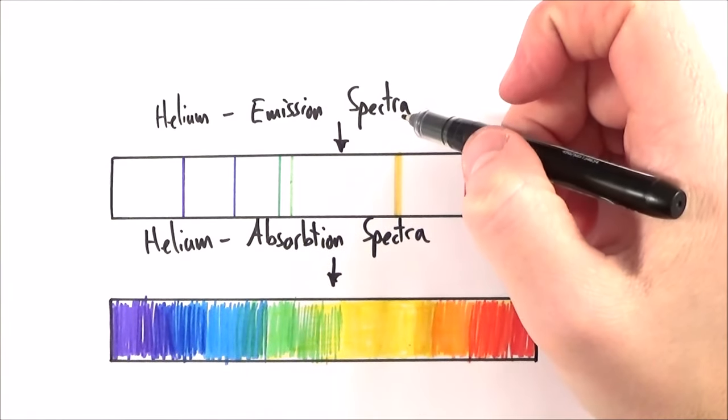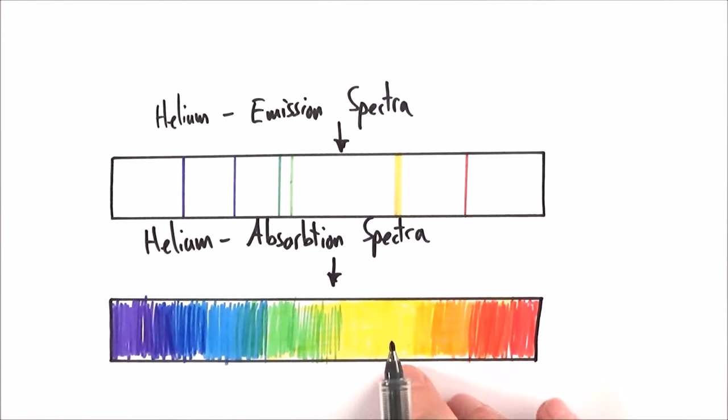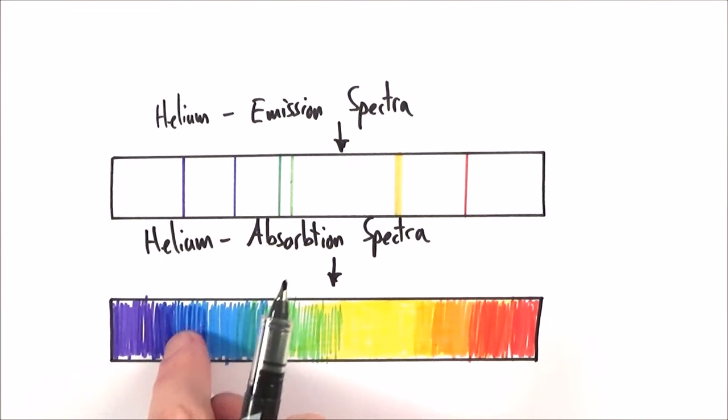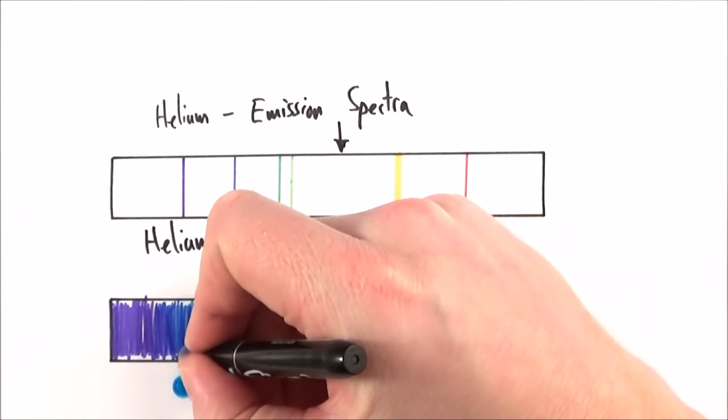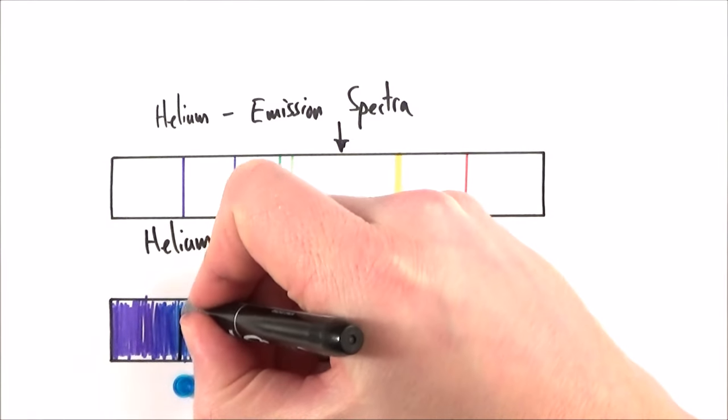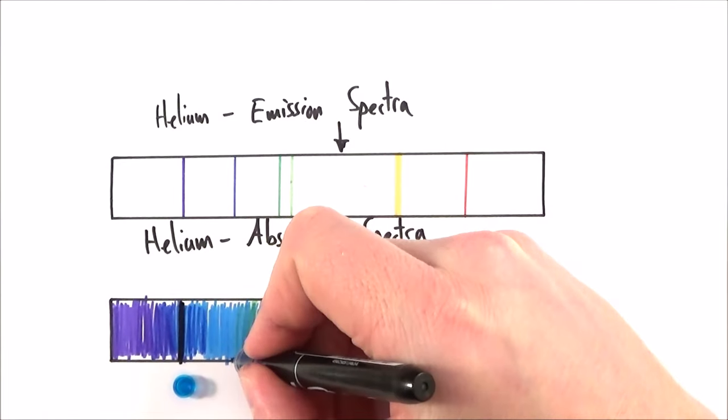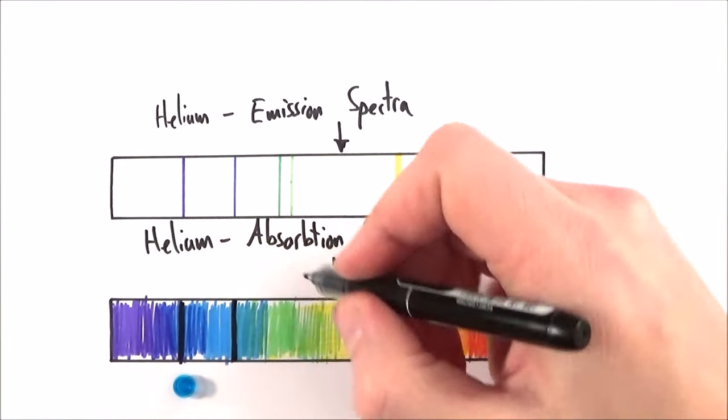An emission spectra is given out by something but an absorption spectra is when you have a cool gas and you shine a load of white light through it. White light being made up of all of the colors of the rainbow. We find that only certain colors or only certain photons are actually absorbed by whatever we've got. We see an anti-emission spectrum.